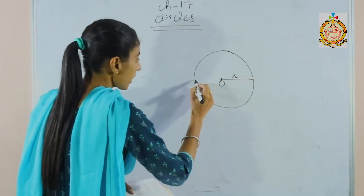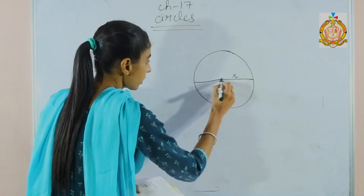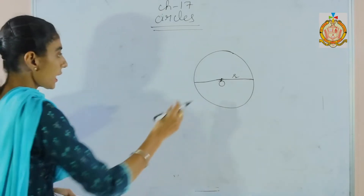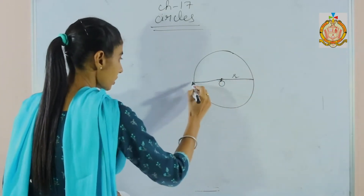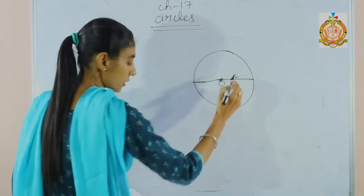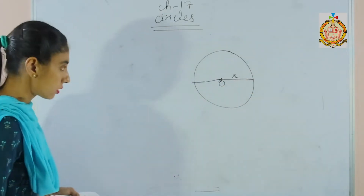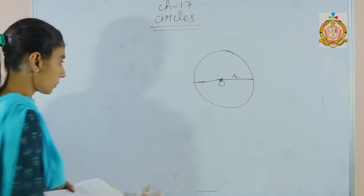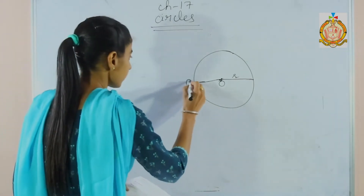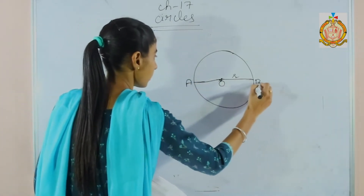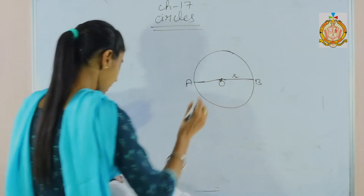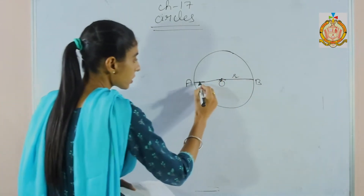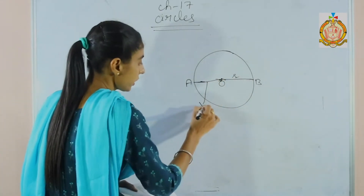And the diameter is the longest chord — that line segment passing through the center of the circle is called the diameter. The longest chord in a circle is called the diameter.